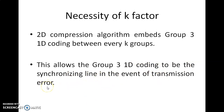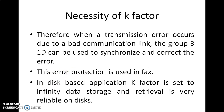This is where error correction comes in — it does not allow the error to be transmitted further. Previously there was no error correction, which was a disadvantage. Therefore, when a transmission error occurs due to a bad communication link, the Group 3 1D coding can be used to synchronize and correct the error.